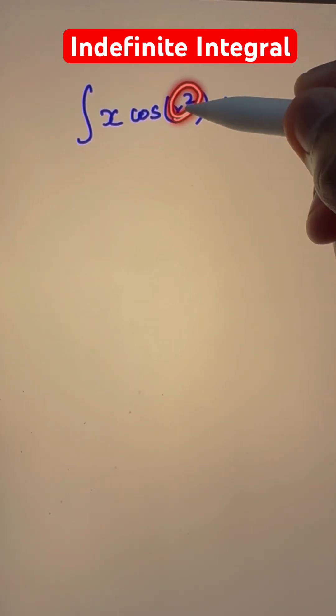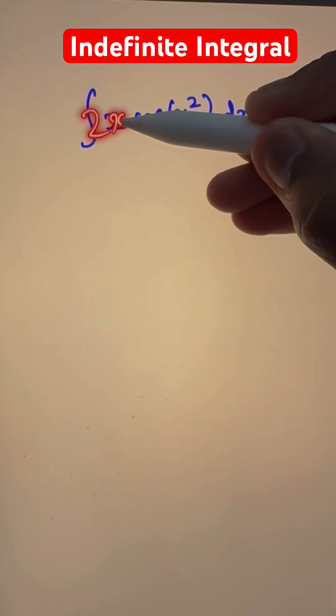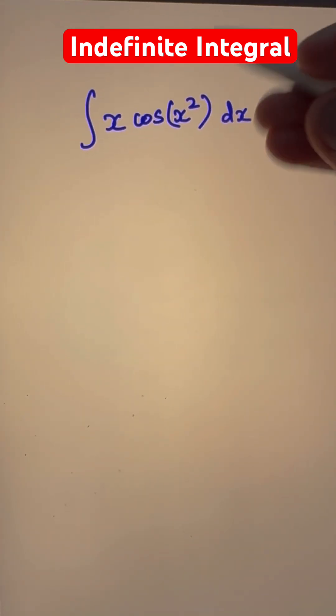But then derivative of x squared is something times x. In this case, it's 2x. So we can use the u substitution rule.